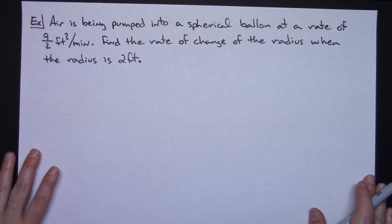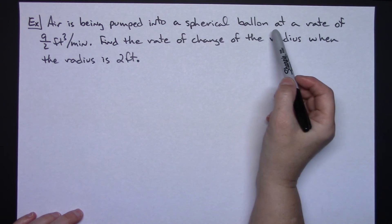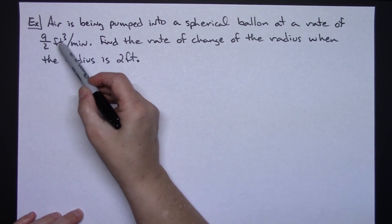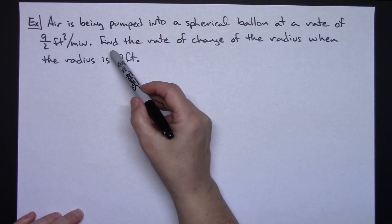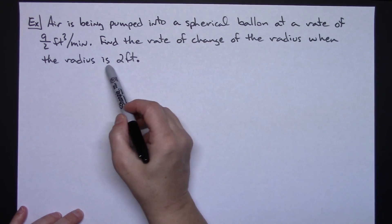For our example for this video: Air is being pumped into a spherical balloon at a rate of 9/2 feet cubed per minute. Find the rate of change of the radius when the radius is 2 feet.